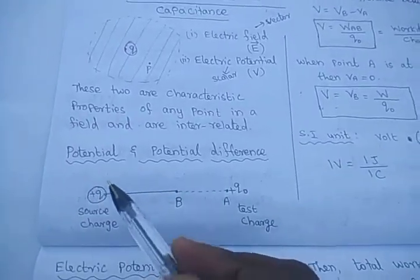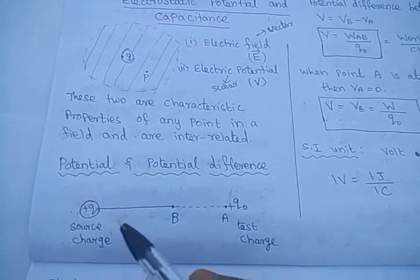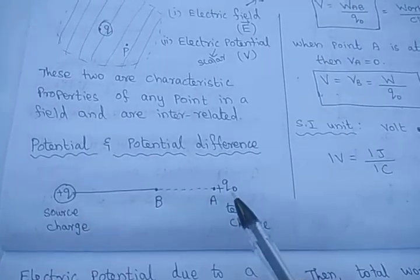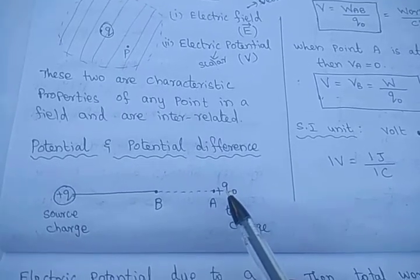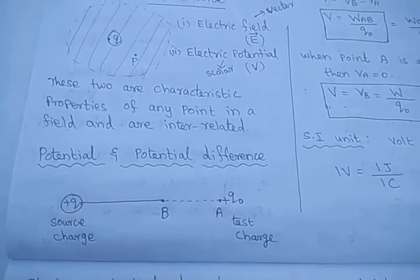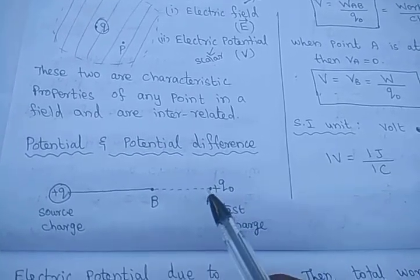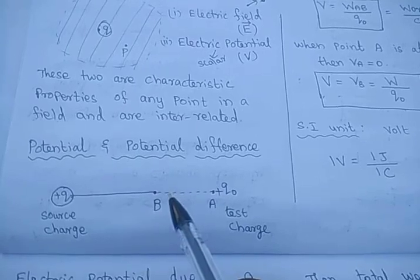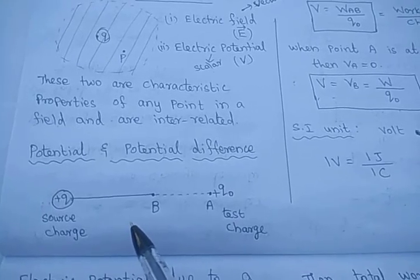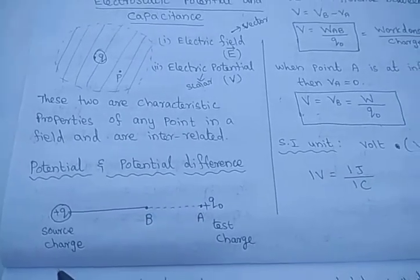So, what is electric potential? In the lower class itself, we studied that it is the amount of work done to bring a unit charge against the source charge. Let us consider a test charge Q₀. If the test charge moves towards the source charge — which is also a positive charge — whenever this positive charge moves from far away towards the source charge, at a particular point it experiences electrostatic repulsion between them.